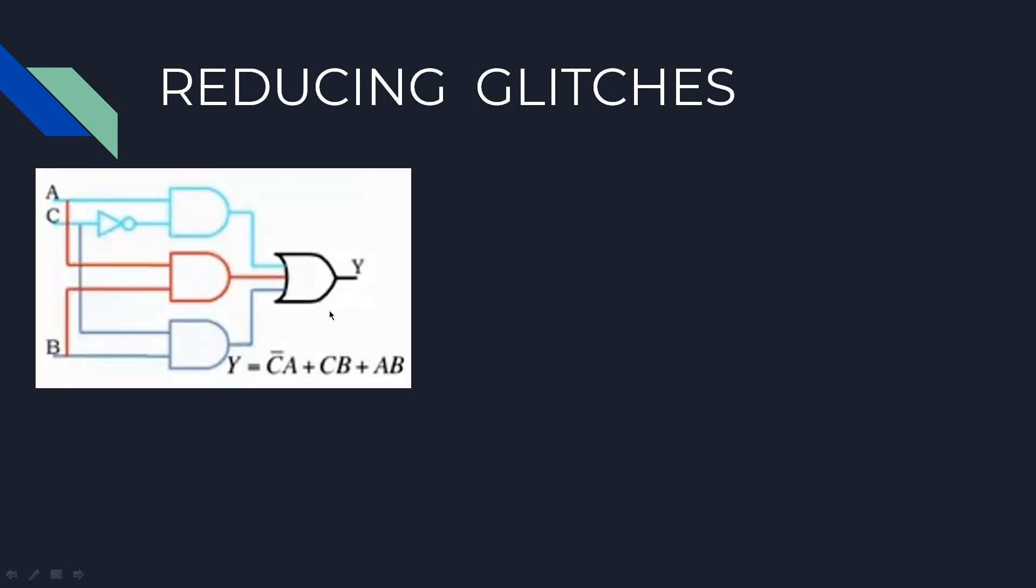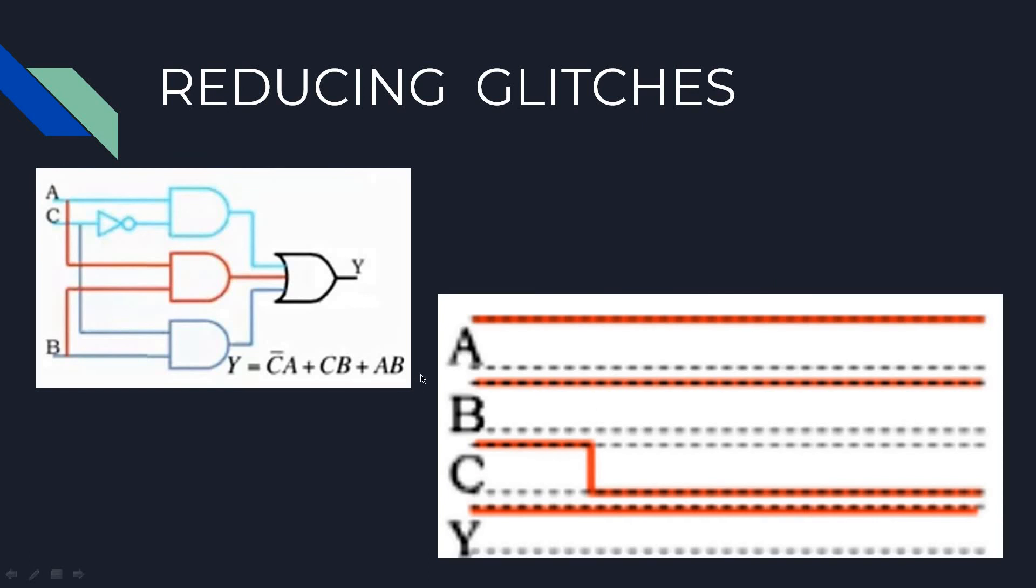So this is the circuit diagram now. In the previous expression this AND gate wouldn't be there if we didn't introduce AB from the K-map. Now this is the output waveform. As you can see there are no glitches here in the output waveform. Now if A and B both are high, output Y will be 1 independent of the value of C input.